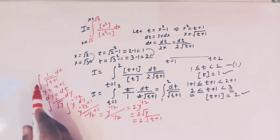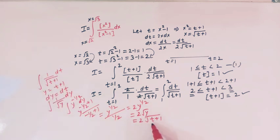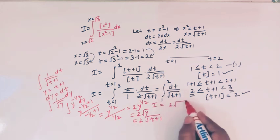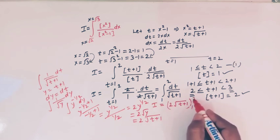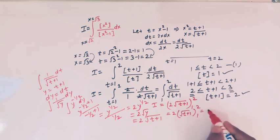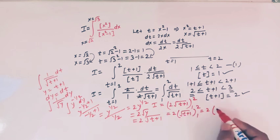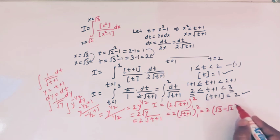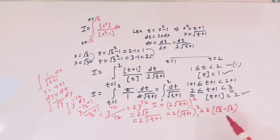We have obtained the indefinite integral of 1 over square root of t plus 1 as 2 times square root of t plus 1. So I equals 2 times square root of t plus 1 evaluated from 1 to 2. Substituting the limits: at t equal to 2 we get square root of 3, and at t equal to 1 we get square root of 2. Therefore the value of the integral is 2 times square root of 3 minus square root of 2.